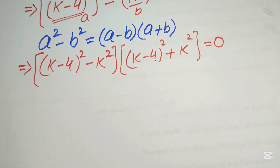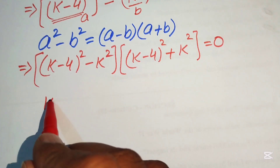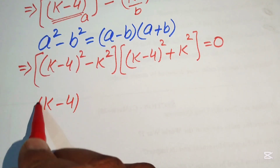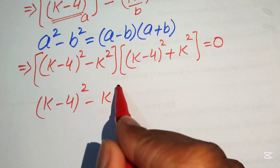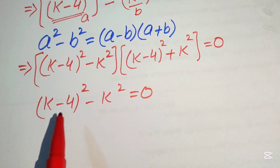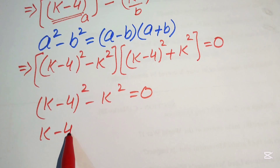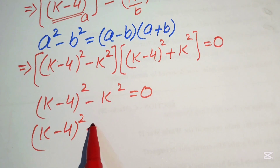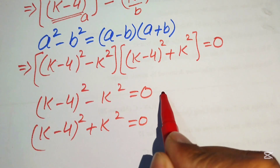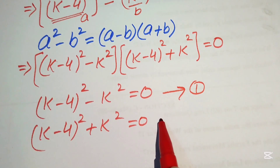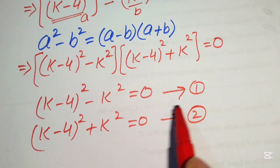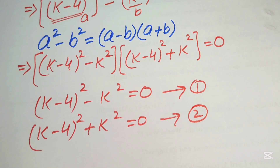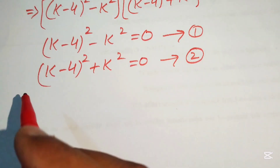We divide this into two cases. Case 1: (k − 4)² − k² = 0. Case 2: (k − 4)² + k² = 0. We first focus on Case 1.